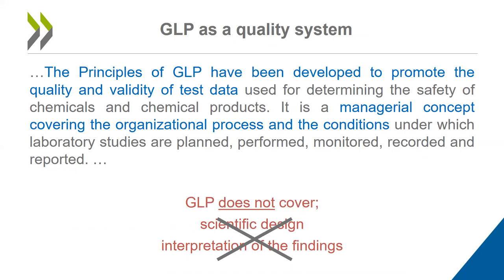As GLP is a quality system, it has been developed to promote the quality and validity of test data using a managerial concept covering the organizational processes and conditions under which laboratory studies are planned, performed, monitored, recorded, and reported. GLP does not cover, for example, scientific design — this would be covered in an OECD test guideline. It also does not cover the interpretation of the findings of the test.